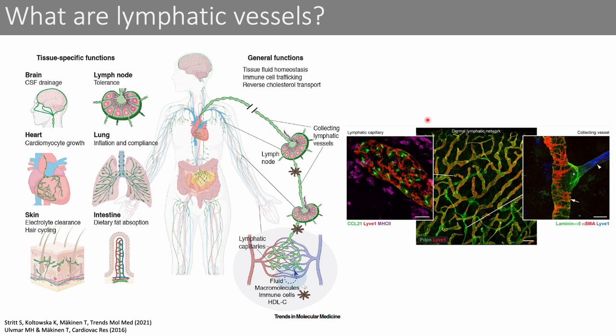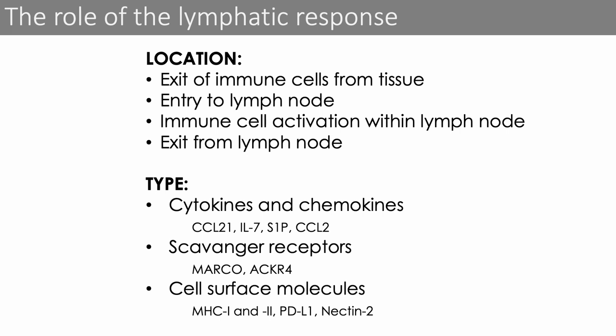Immune cells from the tissue can enter these capillaries and reach downstream draining lymph nodes. They will follow a gradient of the chemokine CCL21, stained in green in this image, which is highly expressed on lymphatic capillaries. Further down, the collecting lymphatic vessels will have valves — seen here in a staining with laminin alpha-5 — to prevent backflow of fluid. Moreover, these collecting vessels are covered by smooth muscle cells and actively propel the fluid forward by contraction. The lymphatics can influence immune cells at numerous locations: in the periphery as cells exit tissues, within the lymph node parenchyma, or as they exit the lymph node.